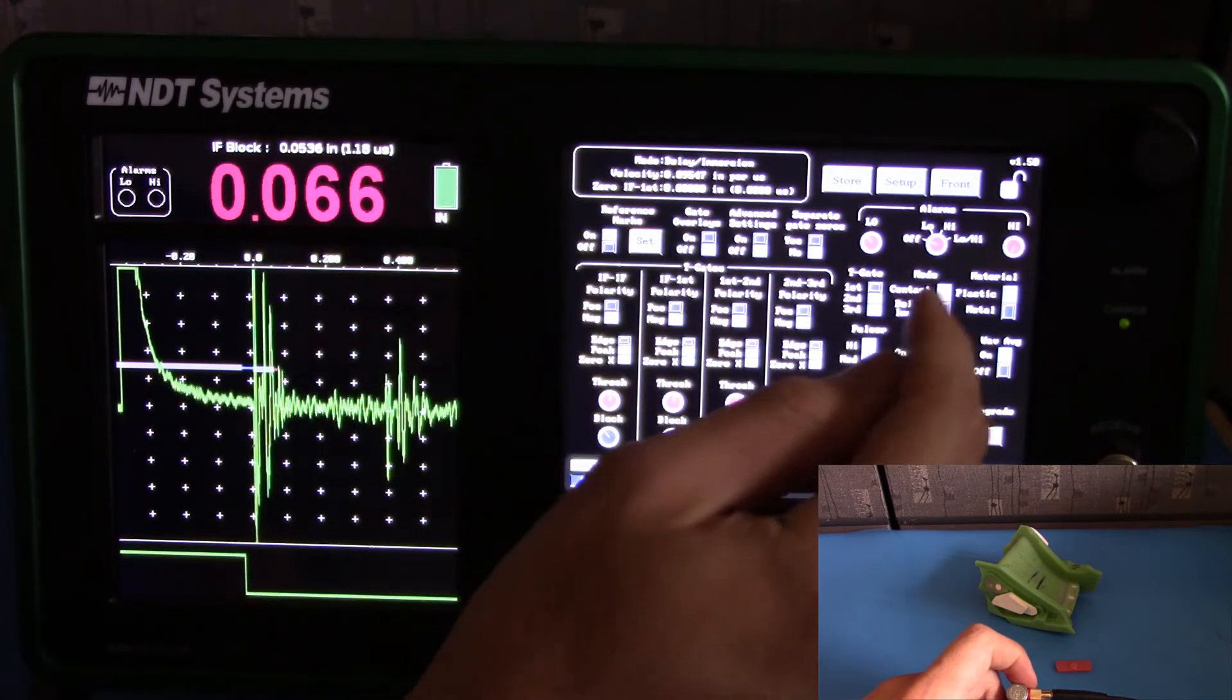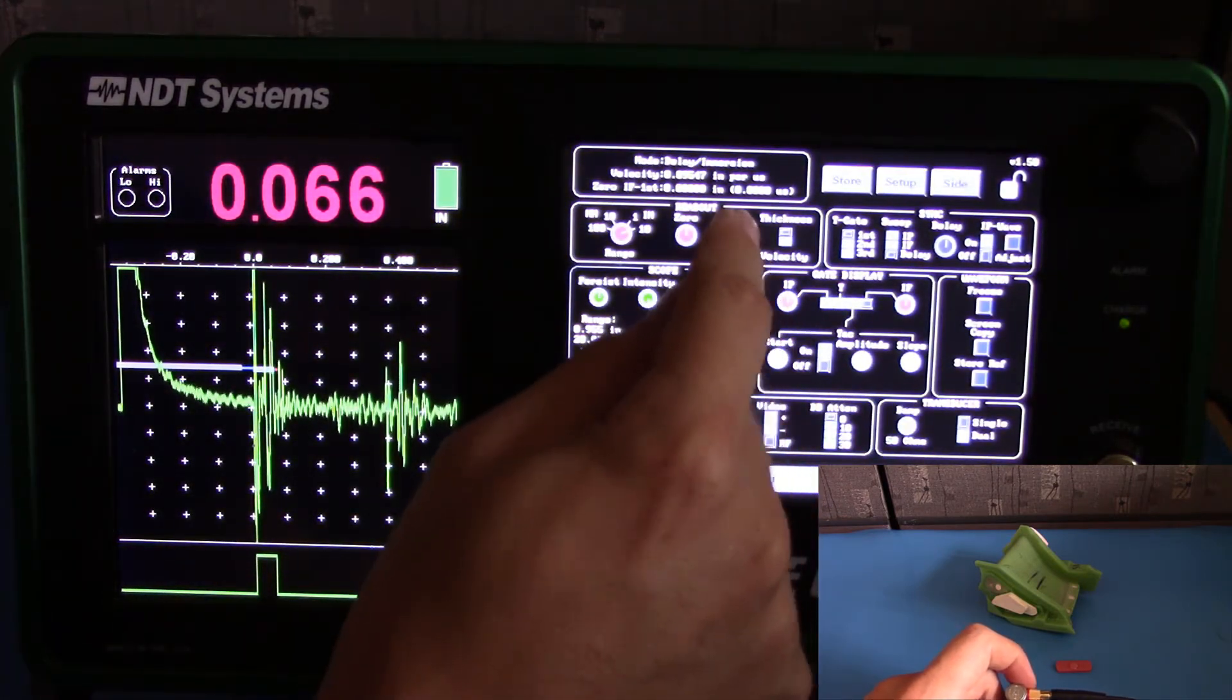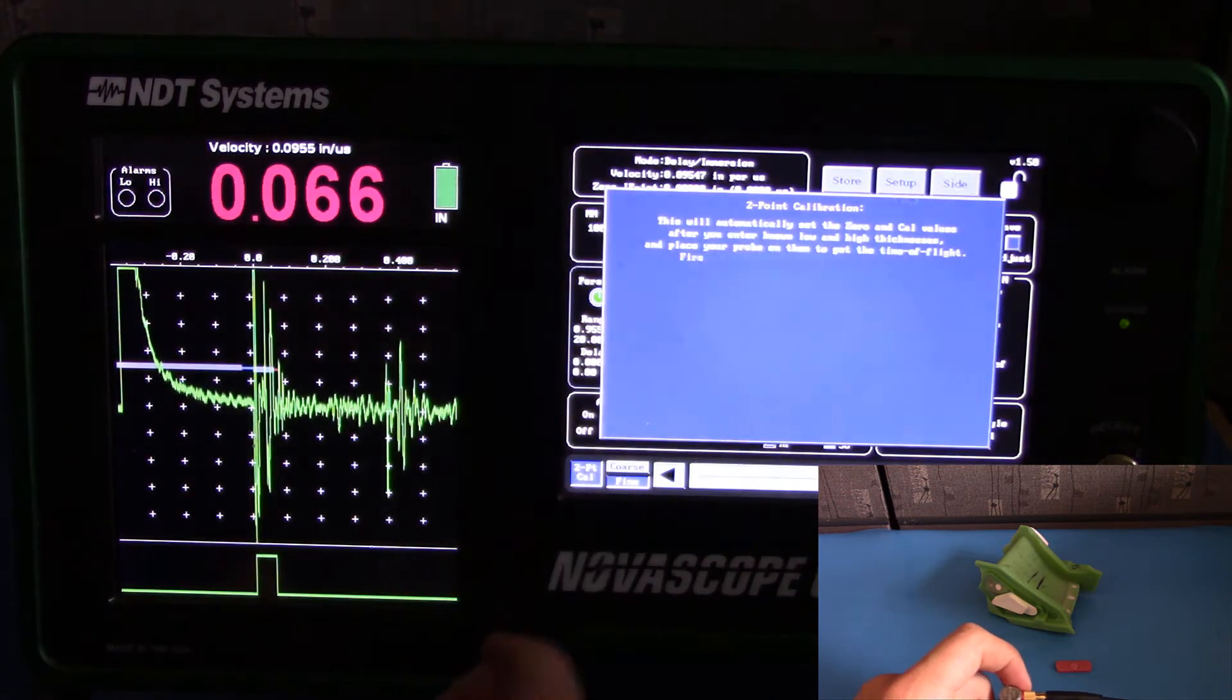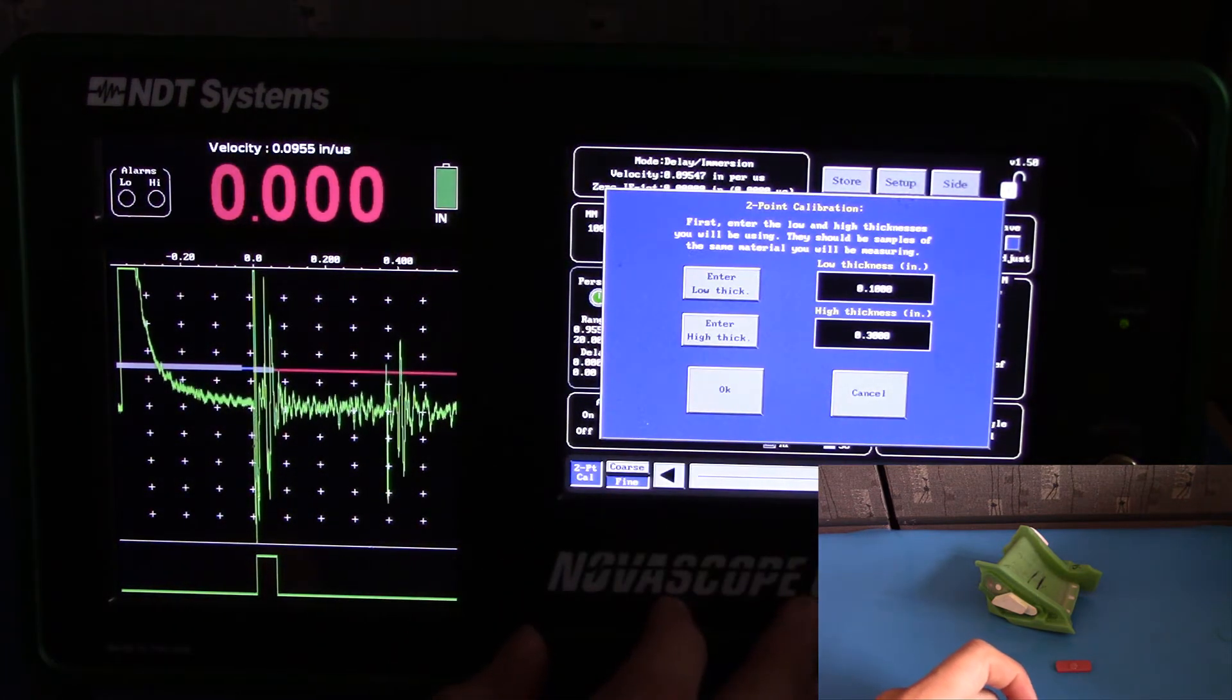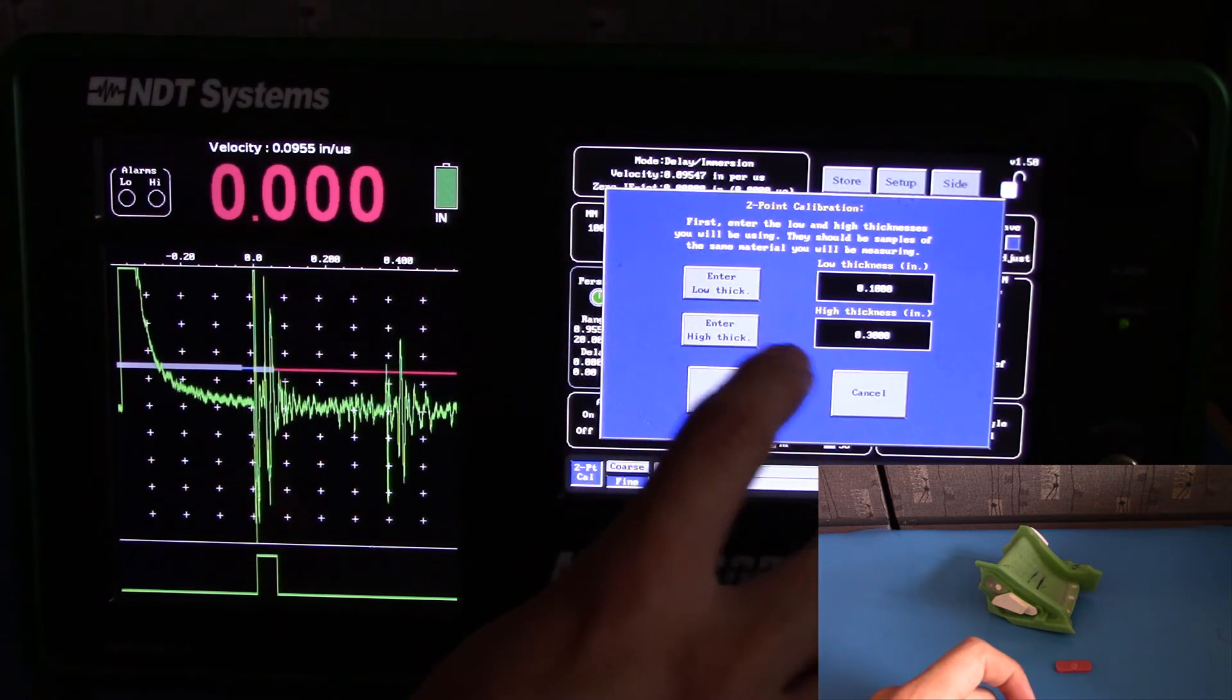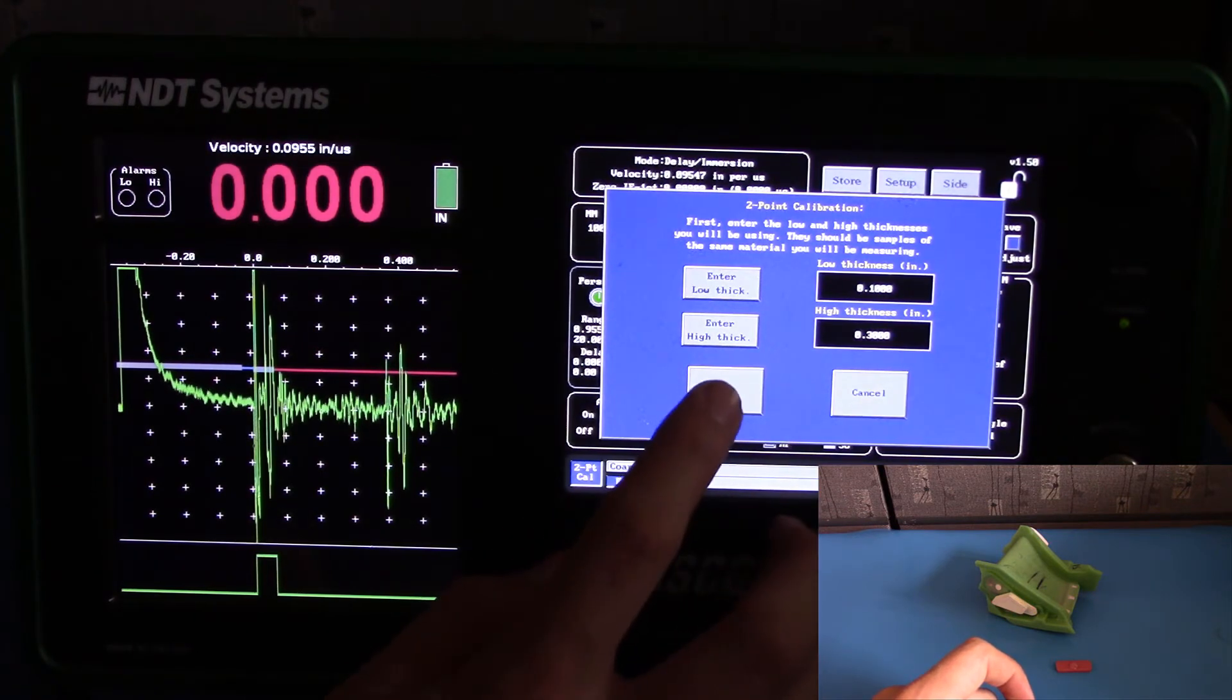Now we're good to couple and calibrate with our 2-point cal. Go to the cal button again and select 2-point cal. Hit OK. Similar as before, but this time, our high thickness is 0.3 inches instead of 1.5. If your settings are correct, hit OK.